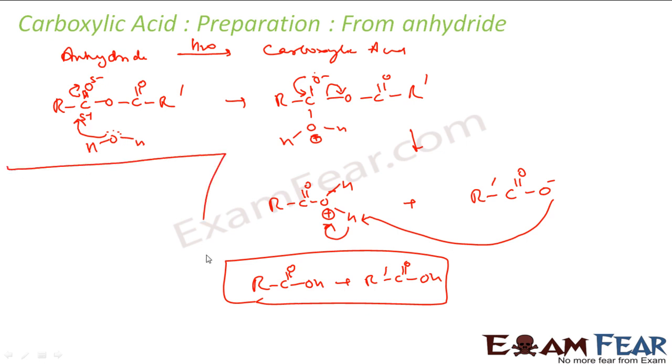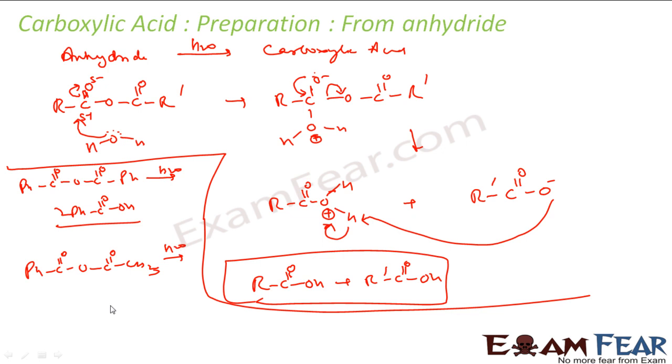For example, let me take an example. So if I have phenyl here and this compound, this is benzoic anhydride. If you do hydrolysis you'll get benzoic acid, two benzoic acid actually. Or you can, if suppose I have this compound, this is benzoic ethanoic anhydride actually. Here also if you do hydrolysis what you get is this one plus CH3 COOH, this is what you get. This is my benzoic acid, this is my ethanoic acid.